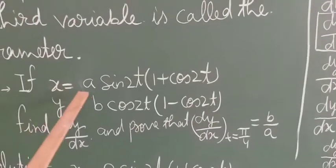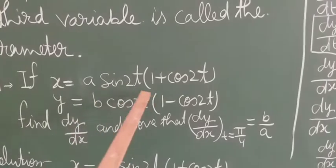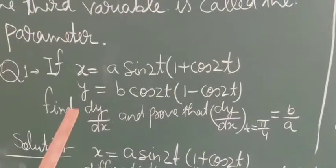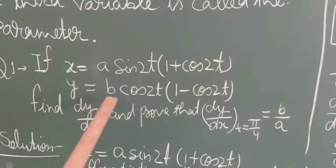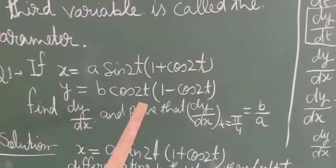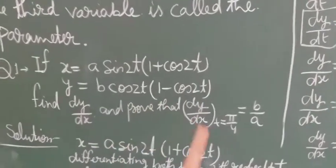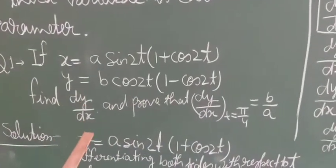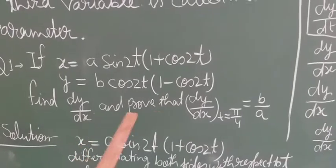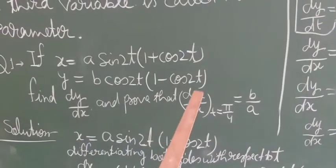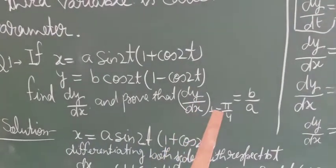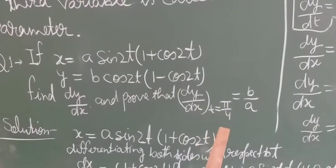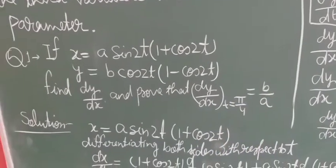x equals a·sin2t·(1 + cos2t), y equals b·cos2t·(1 − cos2t). Find dy/dx, and prove that dy/dx at the point t equals π/4 equals b upon a.